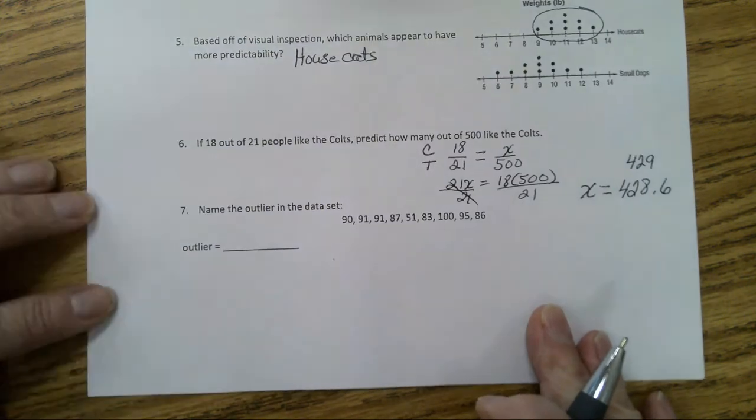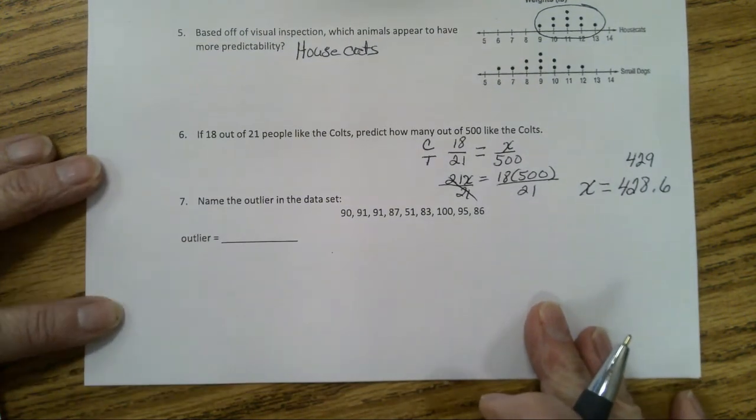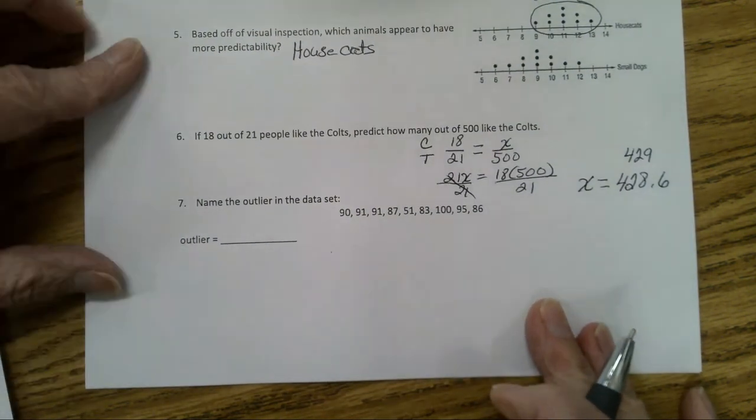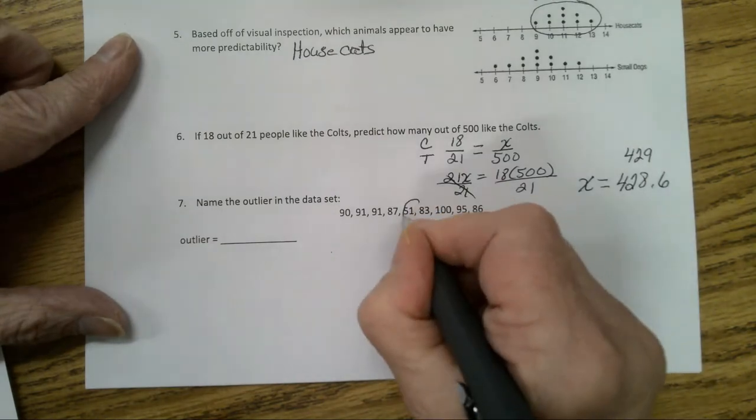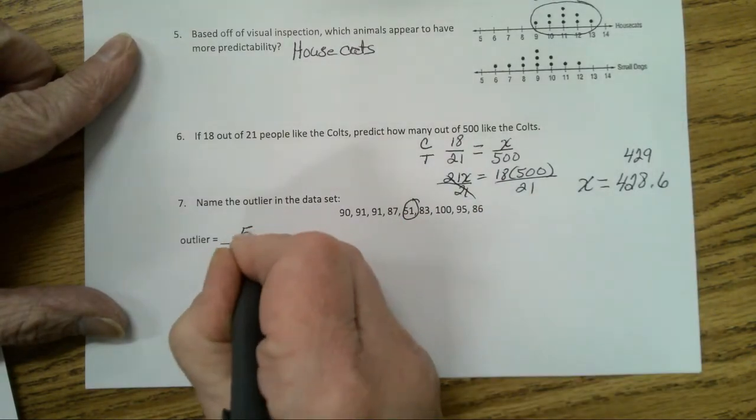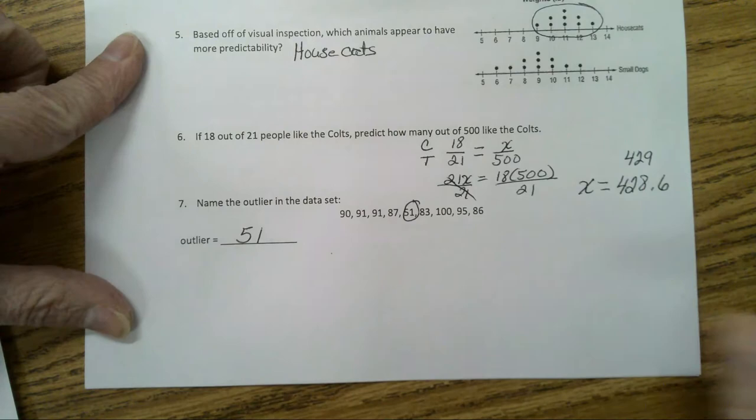In number seven, name the outlier of the data set. Well, which one looks very different than all the others? That would be 51. Now let's go to the next page.